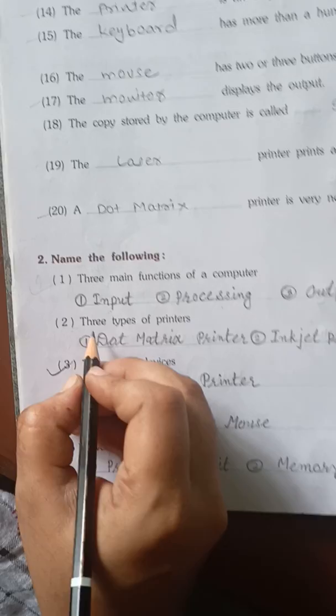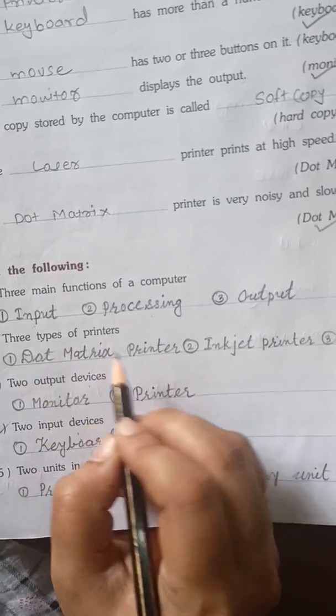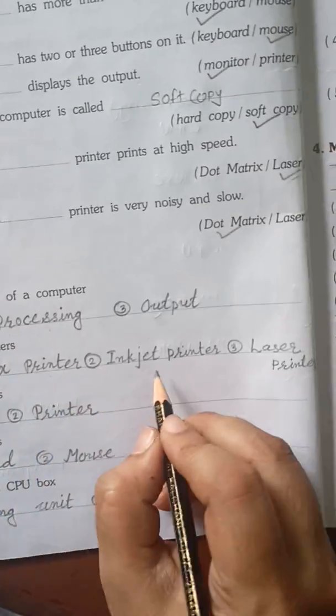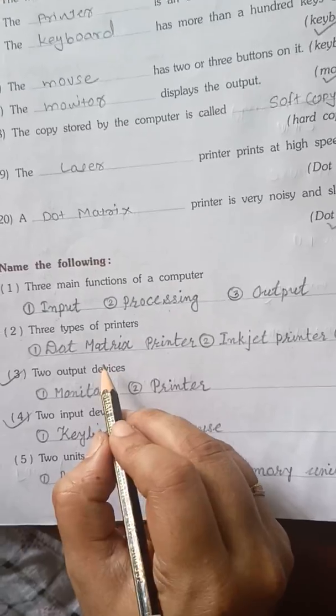Next, three types of printer. How many types of printers are there? As I explained, dot matrix printer, inkjet printer, laser printer. How many types of printers are there? Dot matrix, inkjet, and laser.